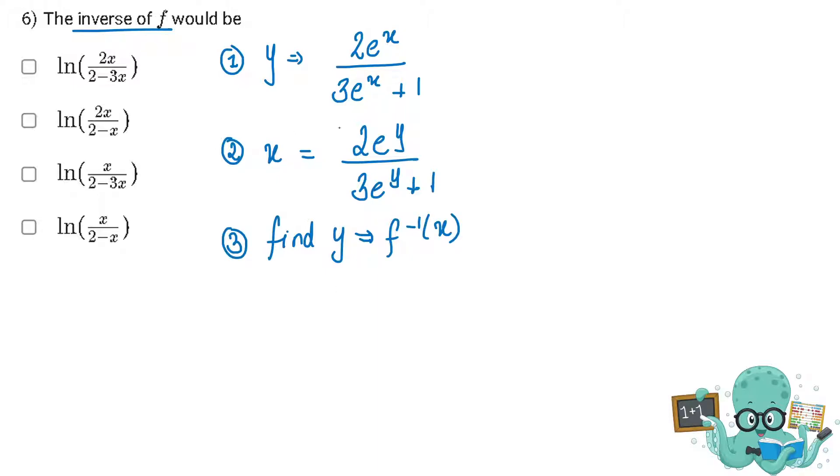So 3e raised to the power y times x plus x equals 2e raised to the power y. I'll take e raised to the power y to one side. So it will be e raised to the power y in brackets, 3x minus 2, equals negative x. I'm changing the signs on both sides to vanish the negative.